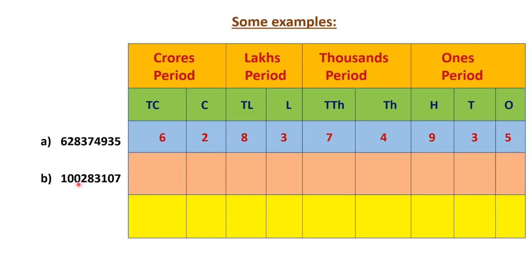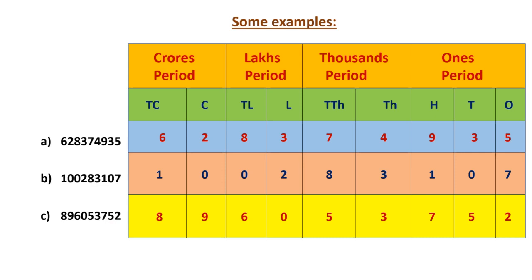Another example: 1,00,28,310,7. Again place from the right hand side — 7 at ones, 0 at tens, 1 at hundreds — moving left. A third example: 89,60,53,752. Place from right: 2, 5, 7, 3, 5, 0, 6, 9, 8. This number is read as eighty nine crore sixty lakh fifty three thousand seven hundred and fifty two.